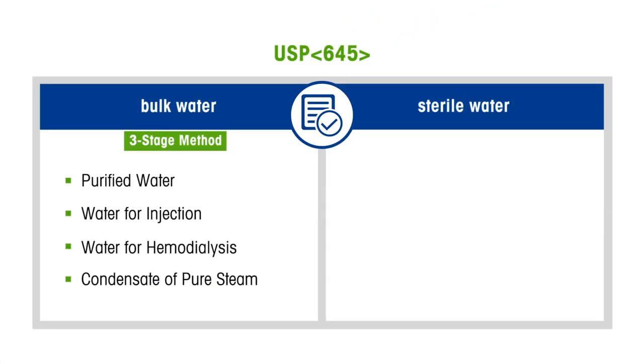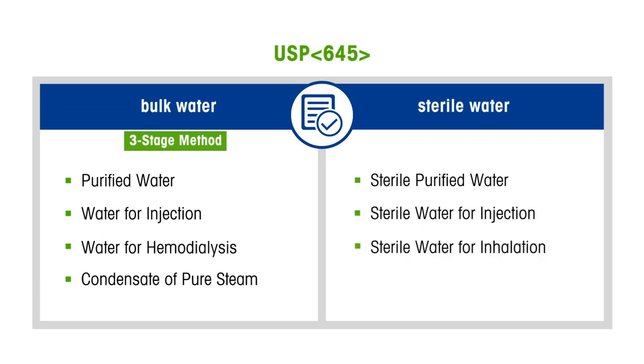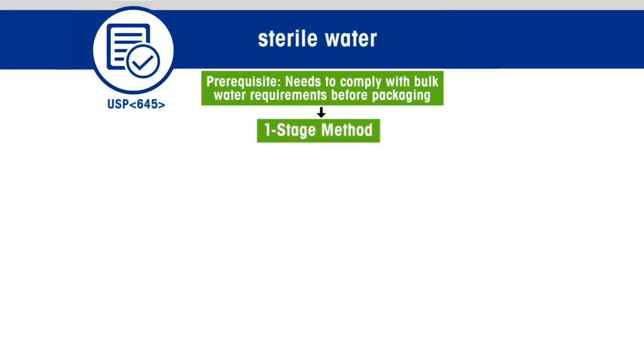The procedure listed under Section Sterile Water is intended for sterile purified water, sterile water for injections, sterile water for inhalation, and sterile water for irrigation. The sterile water is derived from purified water, packaged, and sterilized to prevent any microbial contamination. Hence, sterile water must be compliant with bulk water requirements before packaging. It is a single-stage method.